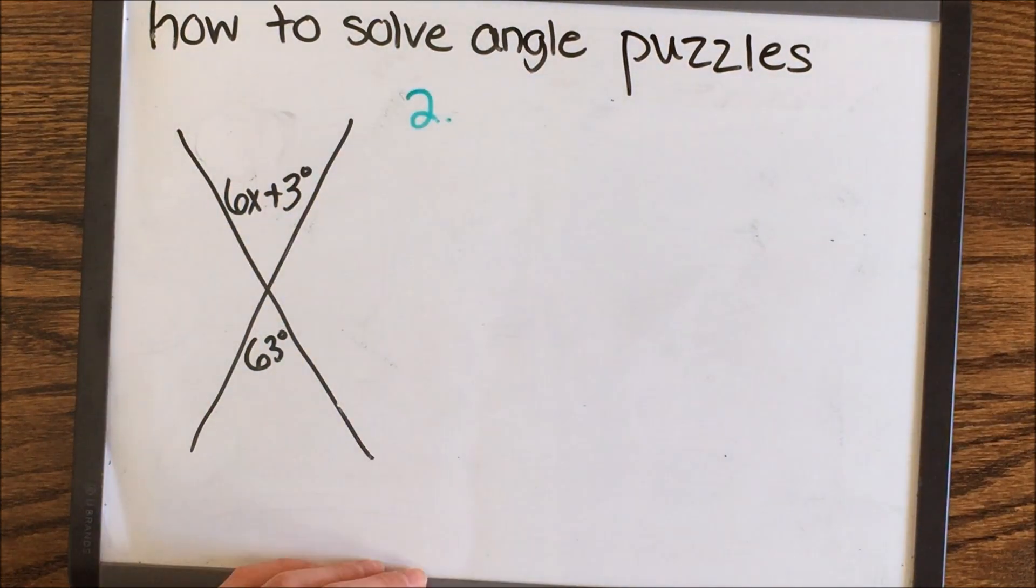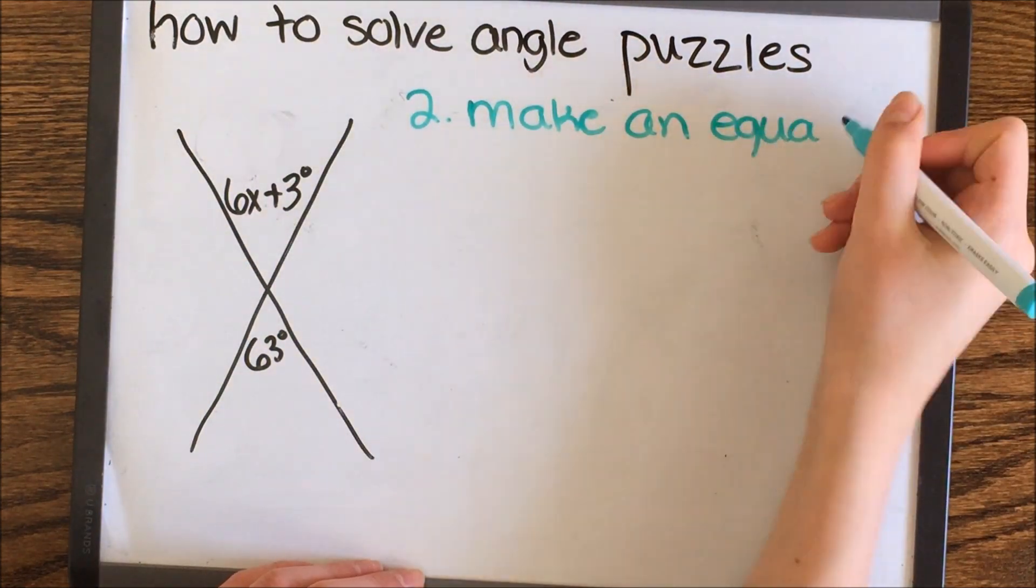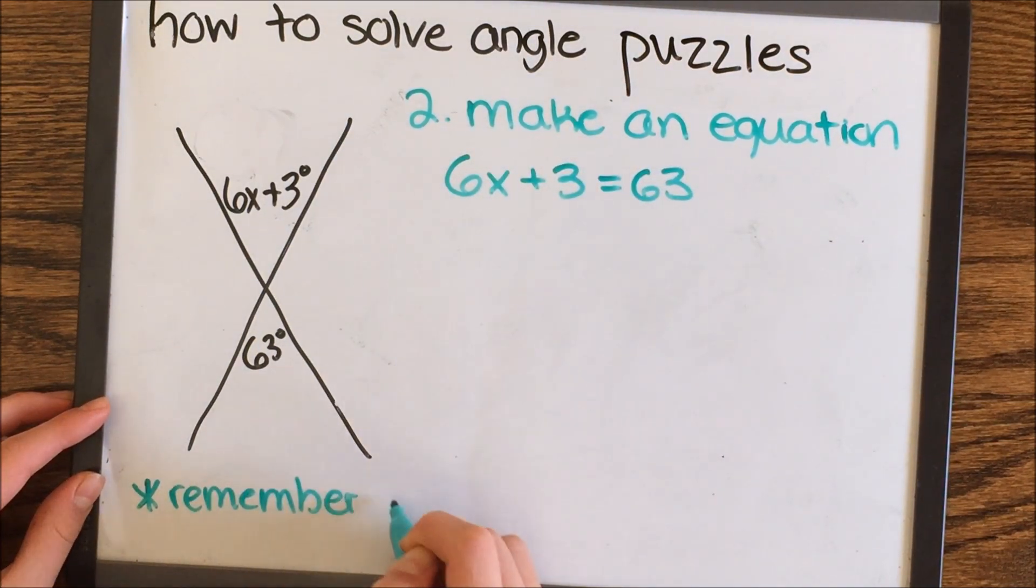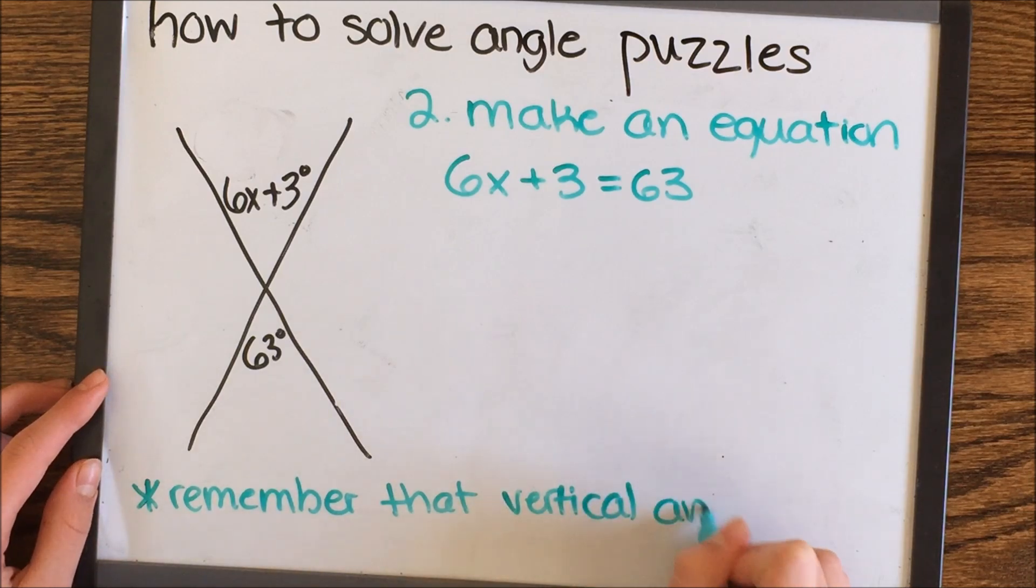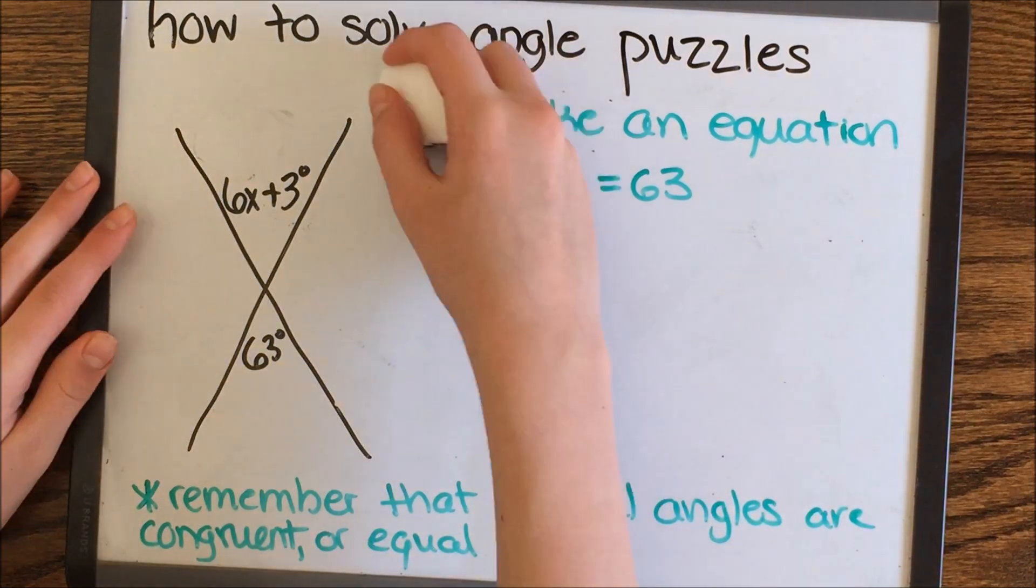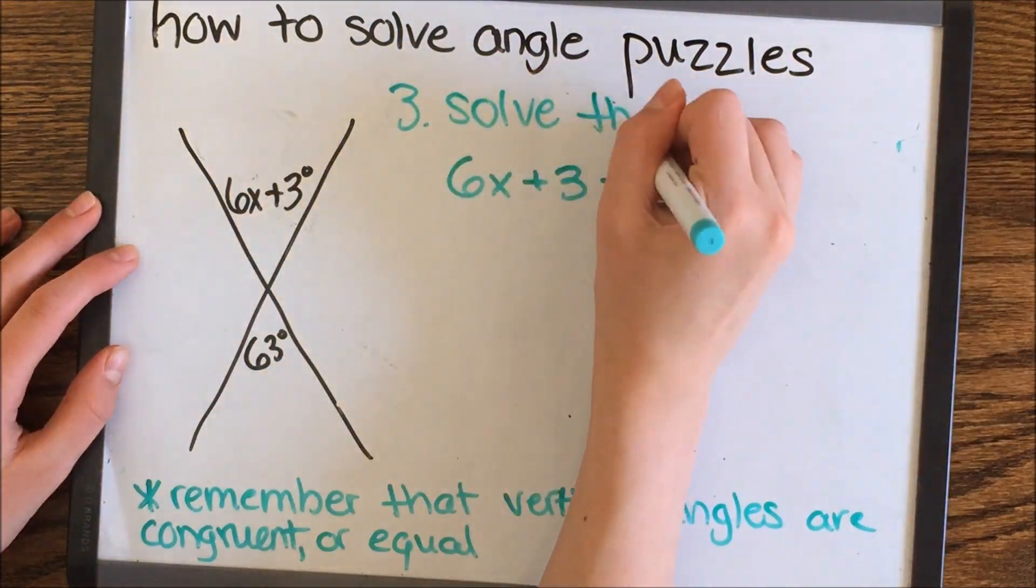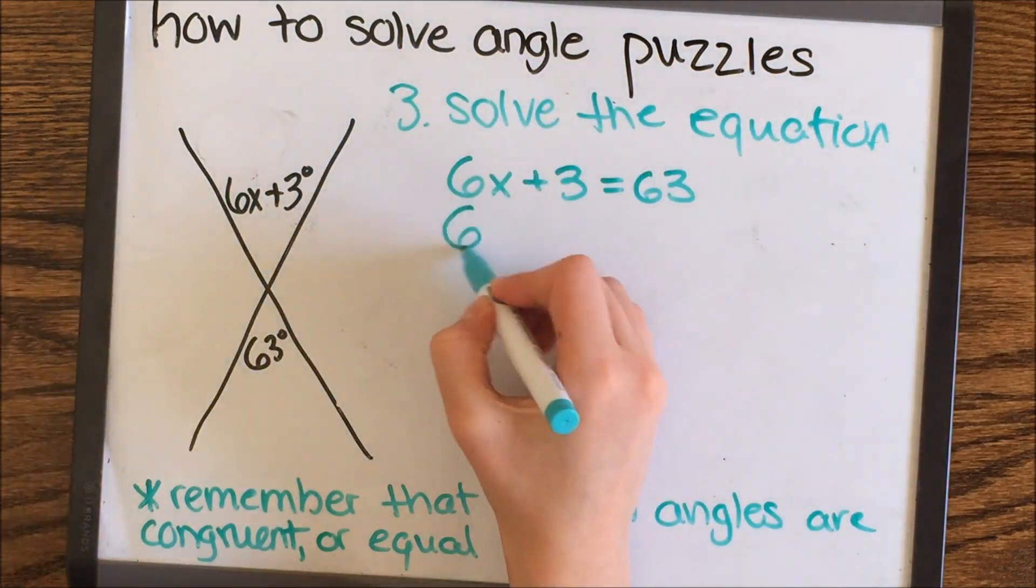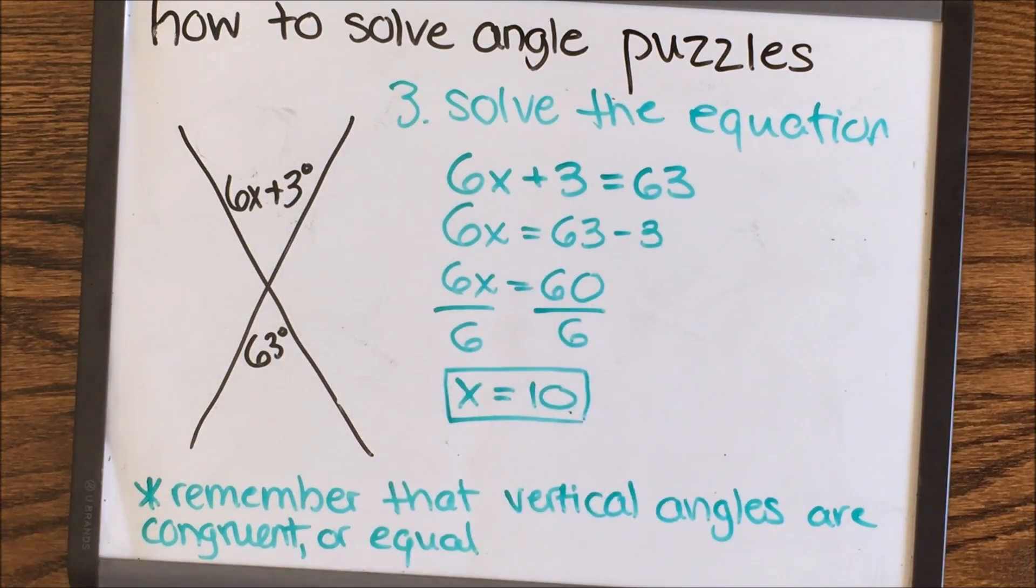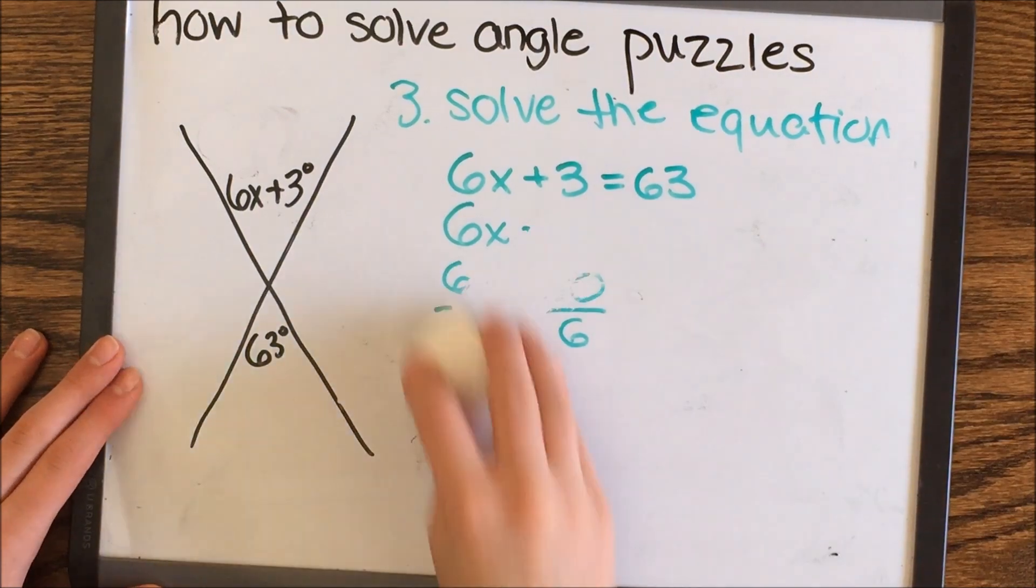When you have a vertical angle, both angles are equal, so you just make an equation like this: 6x plus 3 equals 63. Then we obviously solve the equation. When we solve it, it equals 10. So x is 10.